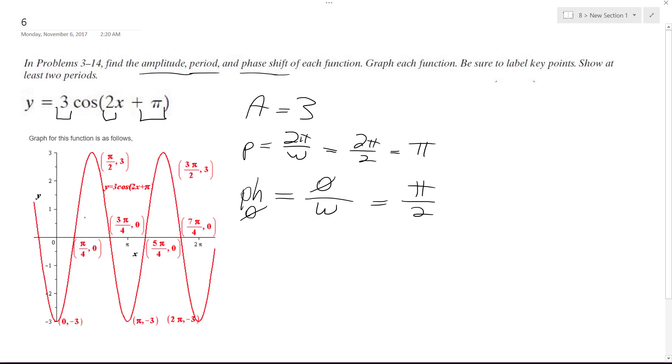So it's got a period of pi, and it's actually going to shift to the left too, so normally, cosine, it would start up at a 3 here, kind of like this.